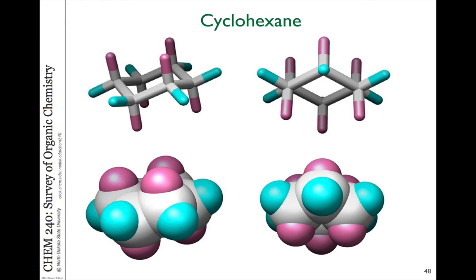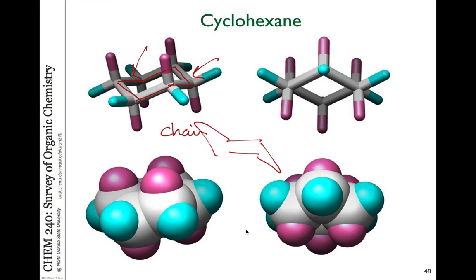When we get to cyclohexane, the cyclic alkane with the least amount of ring strain, we see that it can adopt a conformation where all the bonds are staggered and all the bond angles are close to the ideal 109.5 degrees. I've drawn this cyclohexane with pink hydrogens and blue hydrogens because they are a little bit different. This ring structure is referred to as a chair structure because it looks kind of like a lawn chair — here's the foot of the lawn chair and here's the back.